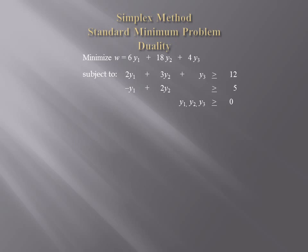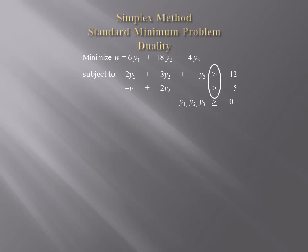The other variables, the y's, are used instead of x's. What makes a minimum problem standard? All the y's must be greater than or equal to zero. The inequalities among the constraints must be greater than or equal, and the numbers after the inequalities must be positive. Also, the coefficients of the y's in the w equation should be positive. In this case, they are 6, 18, and 4.